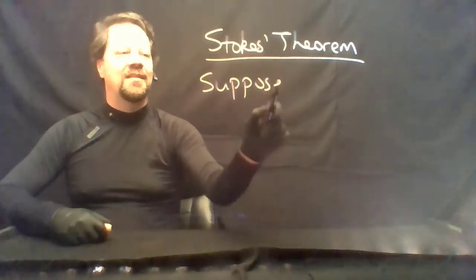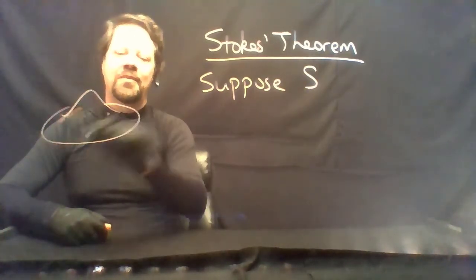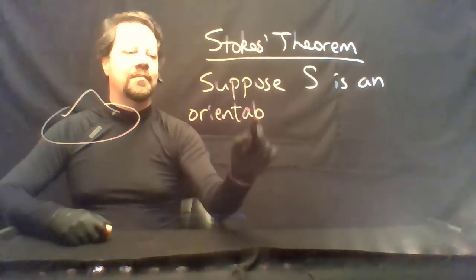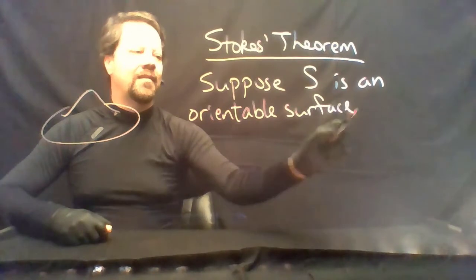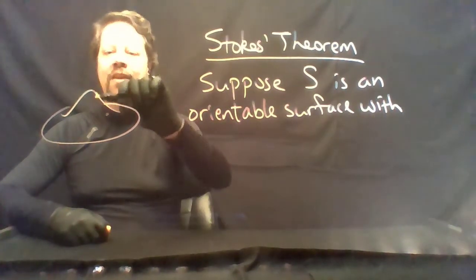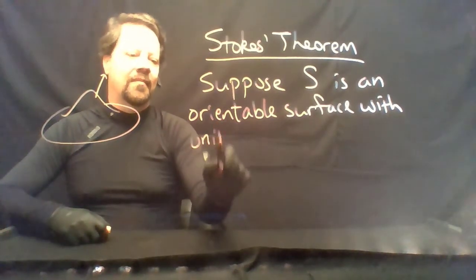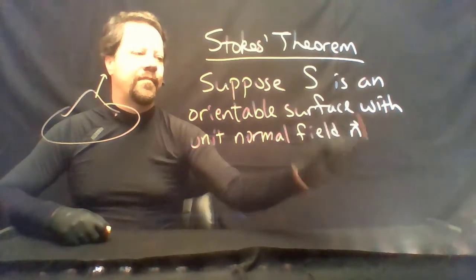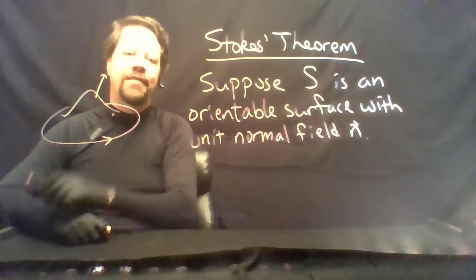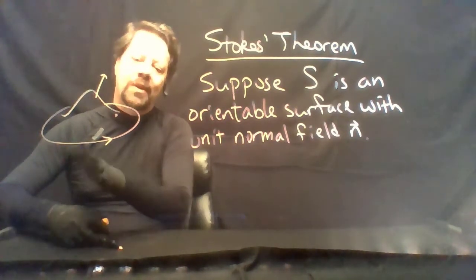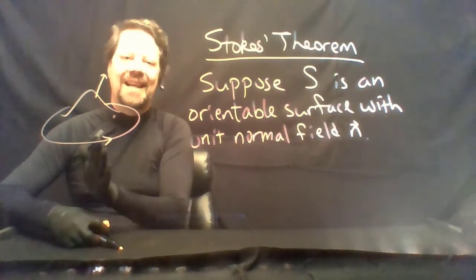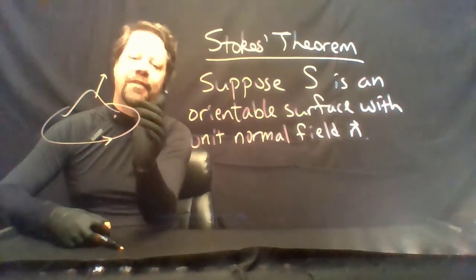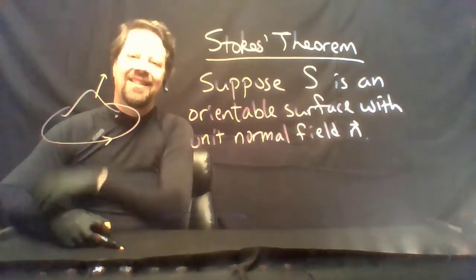It goes like this. Suppose S is a surface with a boundary curve. Not any surface — this is an orientable surface, and since it's orientable, it will have a unit normal field. Since we have this unit normal field, we are also going to give an orientation to the boundary curve, and we want to orient it consistent with the right-hand rule. The right-hand rule says that if you go around following the orientation of that curve with your hand, then your thumb will point in the direction of the normal field that you have assigned.